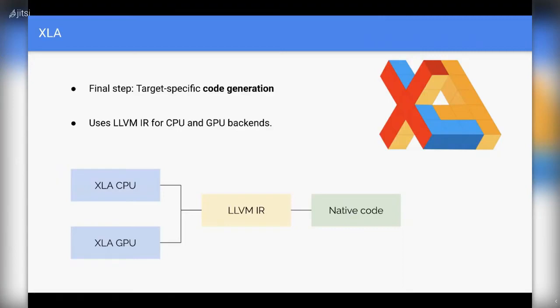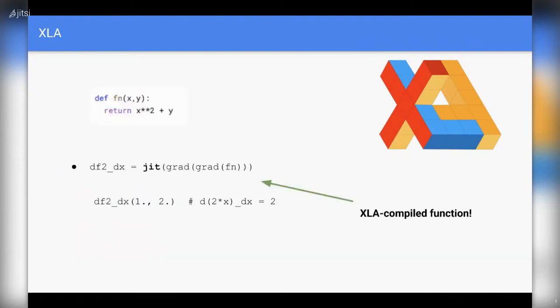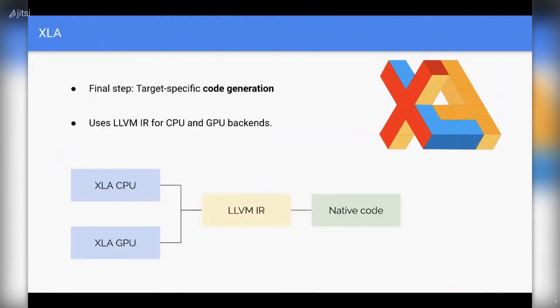The high-level flow is: after all optimization steps, you generate HLO IR graphs for CPU or GPU or both, then generate LLVM IR, and from the LLVM IR you generate native code. But you don't need to think about all of this — you just need to call the JIT function that JAX provides and everything else is handled under the hood. The result would be highly optimized code that could potentially run on multiple GPUs and TPUs.